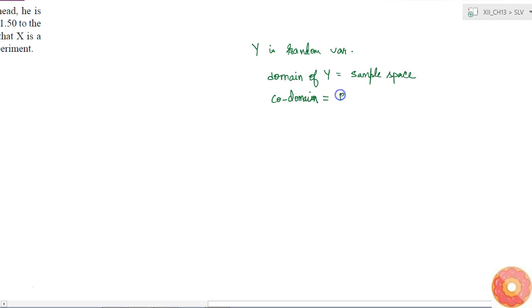The co-domain is the real numbers and it should also satisfy that it should be a function in the sense that every element in the sample space should have a unique value of image in the co-domain. Then we can call Y as a random variable because then Y can be a function.